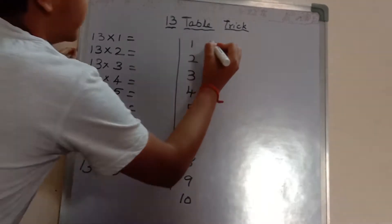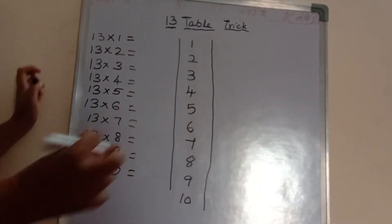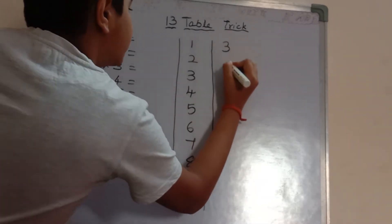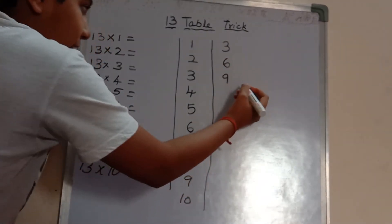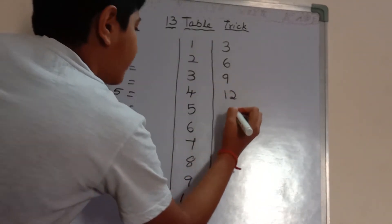After writing this, we will write multiples of 3, that is the 3 table: 3, 6, 9, 12, 15, 18, 21, 24, 27, 30.